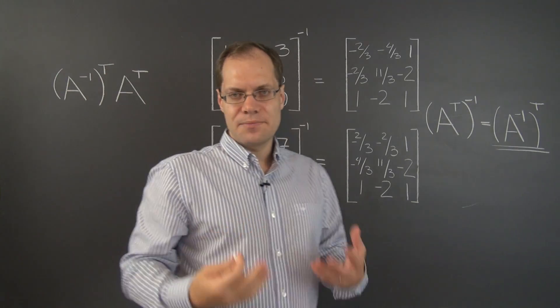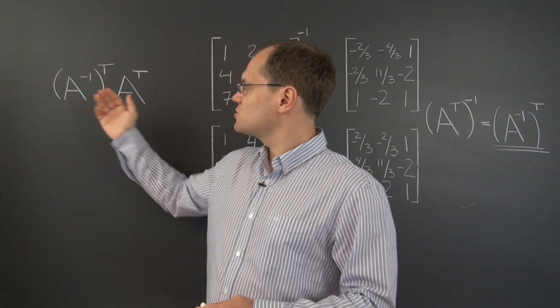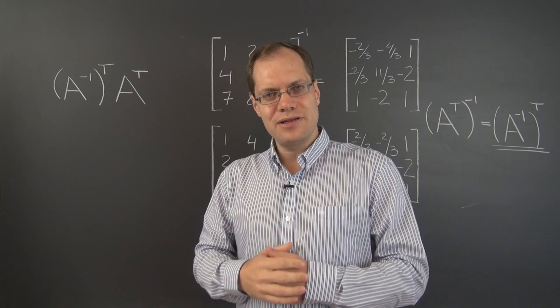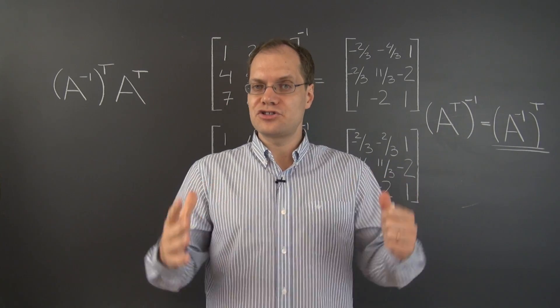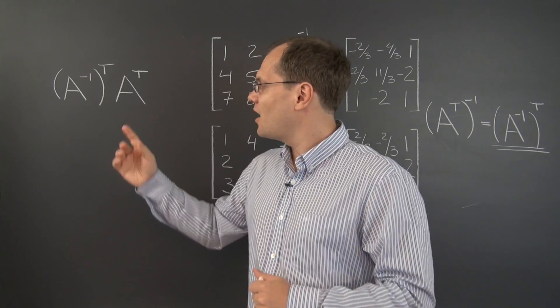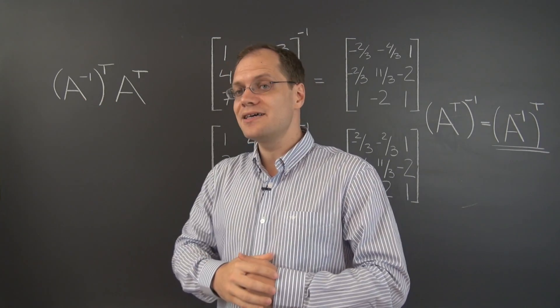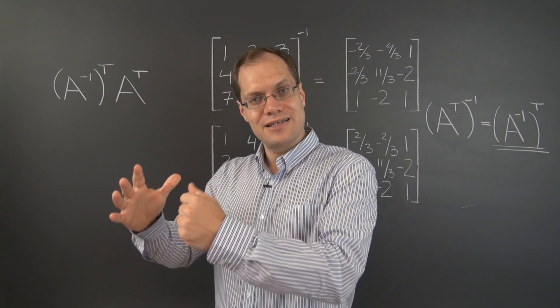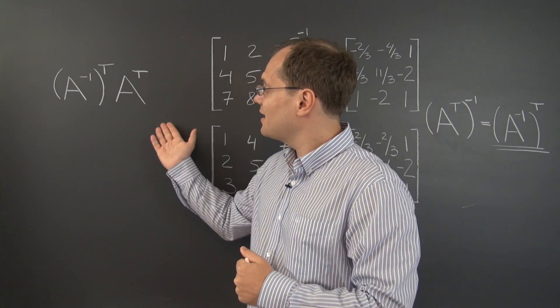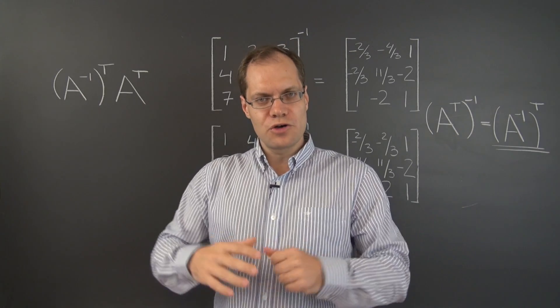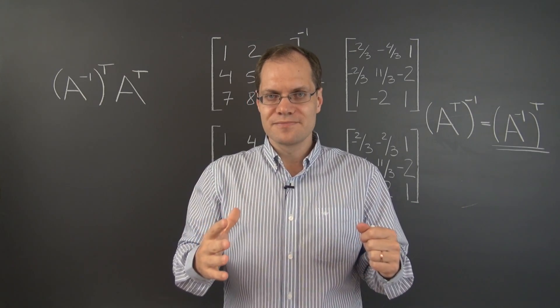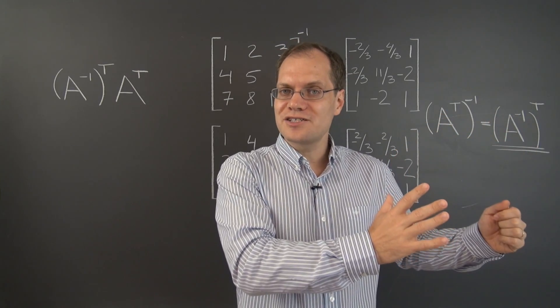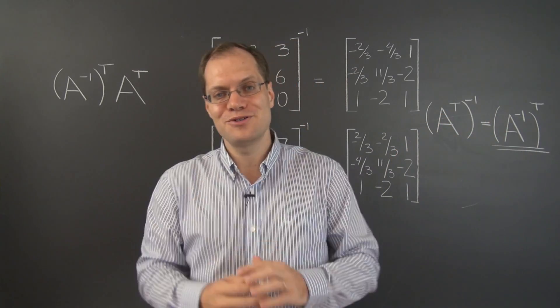And now we see the product of transposes of two matrices. We now know exactly how we can manipulate this product. It will equal the transpose of the product of the matrices themselves in the opposite order. We're now using the formula we just discovered and developed a little bit in reverse. Instead of going from the transpose of a product to the product of transposes, we're going from the product of transposes to the transpose of a product.